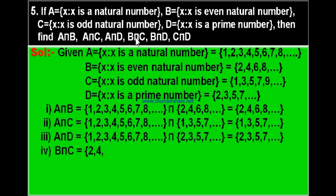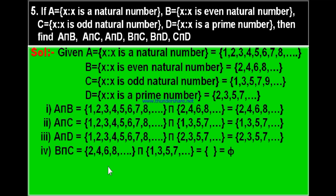Fourth part: B intersection C. Set B = {2, 4, 6, 8, ...} intersection set C = {1, 3, 5, 7, 9, ...}. If you look at both sets, there is no common element. Why? Because these are even numbers and these are odd numbers — there is no even number which is also an odd number. Therefore B intersection C is the empty set ∅.